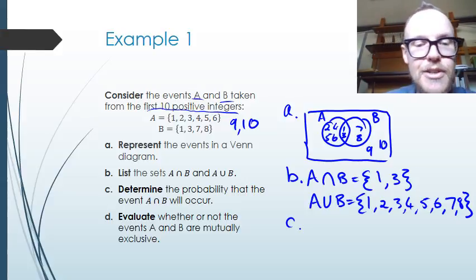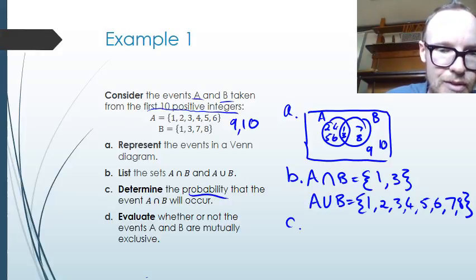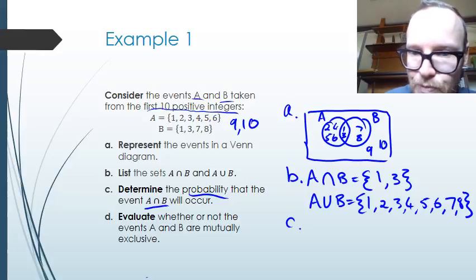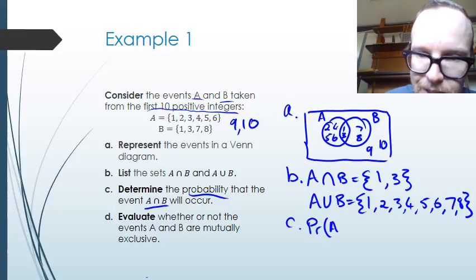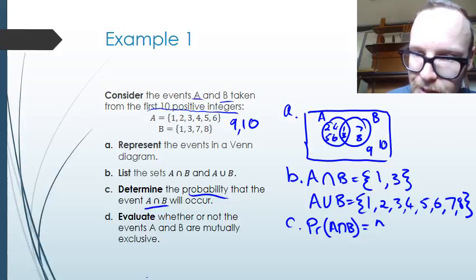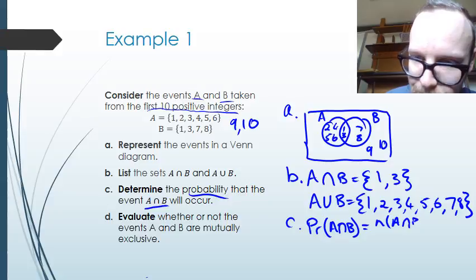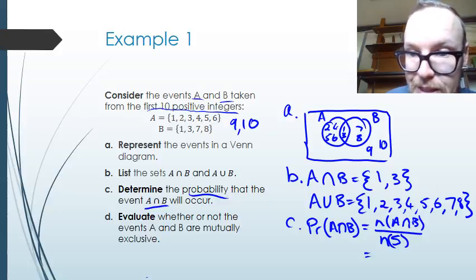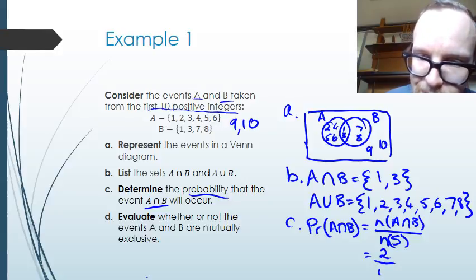For part C, we're asked to determine the probability that event A intersection B will occur. The probability of A intersection B is the number of values in A intersection B divided by the number in the sample space. The number in A intersection B is 2 and the sample space is 10, so the probability is one-fifth.